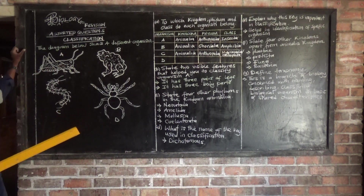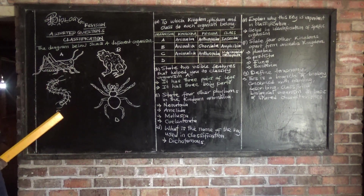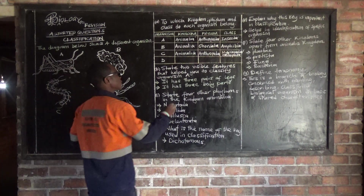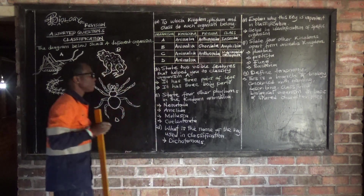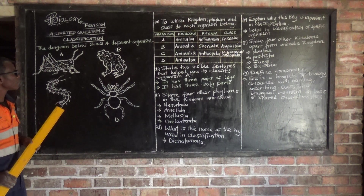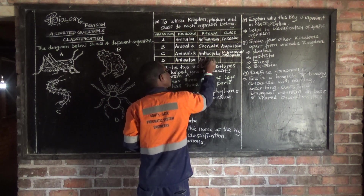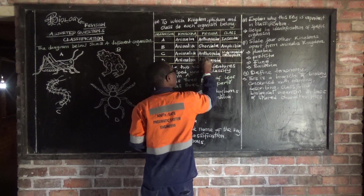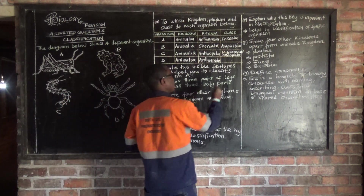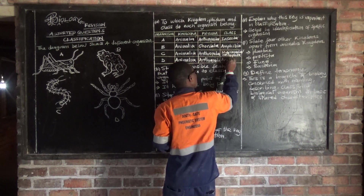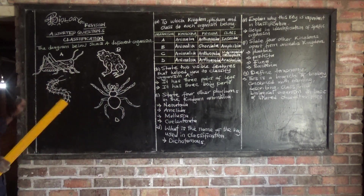Then we have organism D. This one is a spider. To which kingdom does a spider belong? A spider belongs to a kingdom called Animalia. The phylum to which the spider belongs is called Arthropoda. Then the class is called Arachnida — this one belongs to a class called Arachnida. That's the class to which the spider belongs. So we are done classifying these organisms A, B, C, and D.